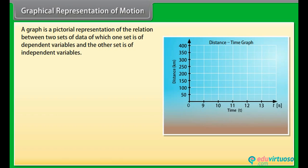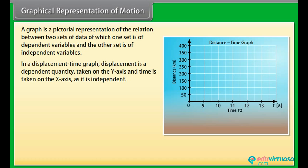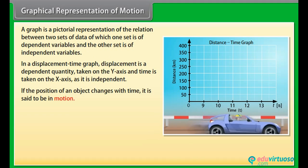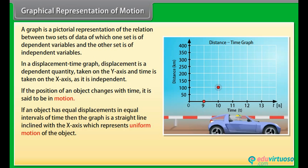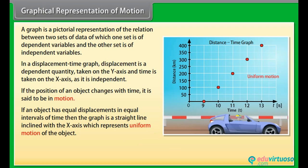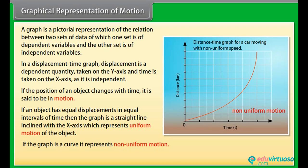Graphical representation of motion. A graph is a pictorial representation of the relation between two sets of data — one of dependent variables and the other of independent variables. In a displacement-time graph, displacement is taken on the y-axis and time is taken on the x-axis. If the position of an object changes with time, it is said to be in motion. If an object has equal displacements in equal intervals of time, the graph is a straight line inclined to the x-axis, representing uniform motion. If the graph is a curve, it represents non-uniform motion. The slope of the displacement-time graph gives the velocity of the object.